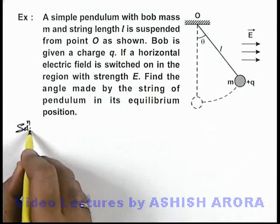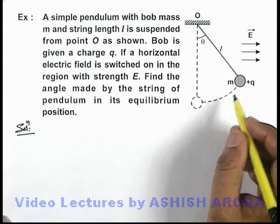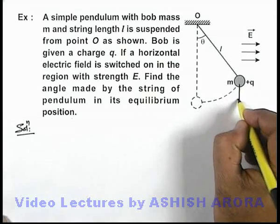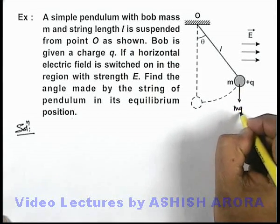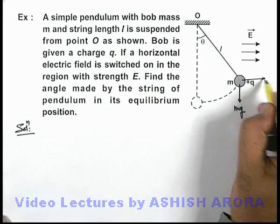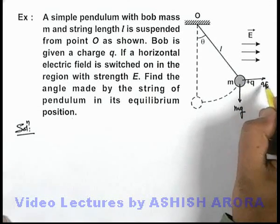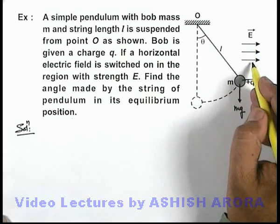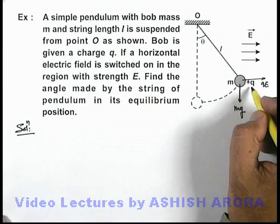Here we can analyze the situation in equilibrium position. The bob will be experiencing its weight mg in the downward direction and the electric force qE in the horizontal direction, in the direction of the field, because it is given a positive charge.